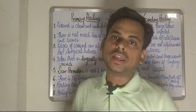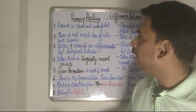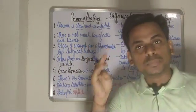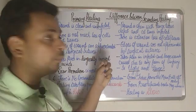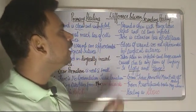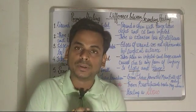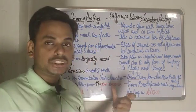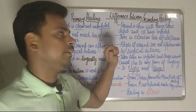Primary healing mostly occurs in clean and uninfected wounds — specifically in clean incised wounds. Secondary healing, by contrast, occurs in open wounds with large tissue defects, and at times infection may also be present. So secondary healing mostly occurs in open, potentially infected wounds with large tissue defects.